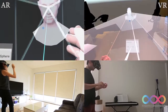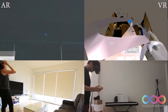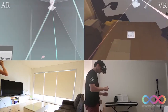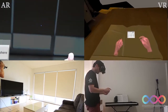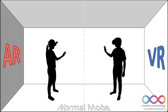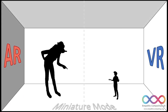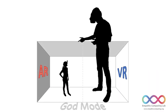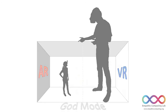Our first technique demonstrates the VR user's ability to scale himself bigger or smaller relative to the real world. In the normal scale mode, we have a one-to-one scale between the AR and VR users. In the miniature mode, the VR user is a fraction in size compared to the AR user. In the god mode, the VR user can be bigger than the AR user in her room.